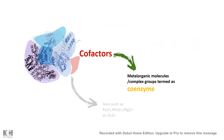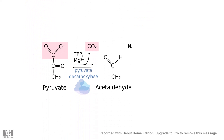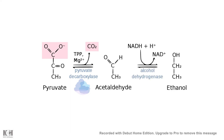Now we understand how metallic ions can serve as cofactors. Let's talk about complex organic groups that can serve as a coenzyme. Remember, a coenzyme is one type of cofactor — one version of it.